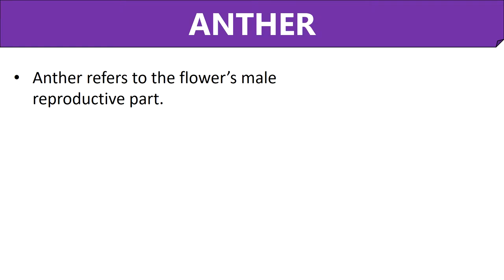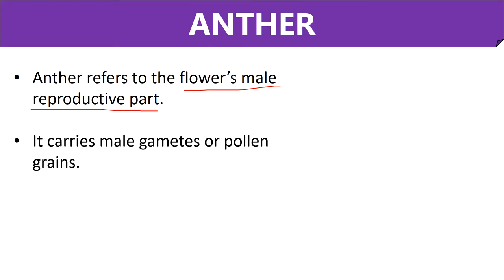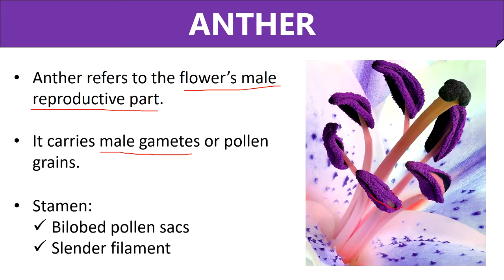Let us start by defining the term anther. In simple words, an anther contributes to the flower's male reproductive part because it exists as a sac-like structure that reserves the pollen grains, or male gametes. The bilobed pollen sac or anther and a long and slender filament together form the male reproductive part of the flower, commonly called stamen or androecium.